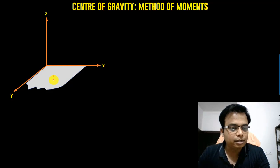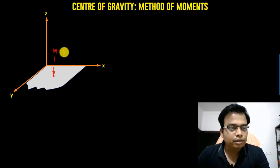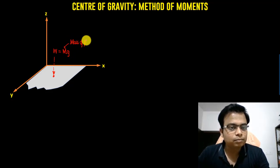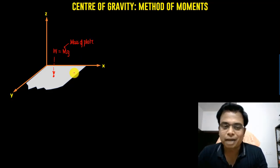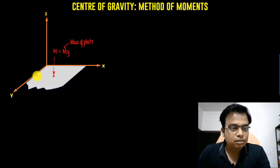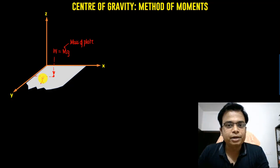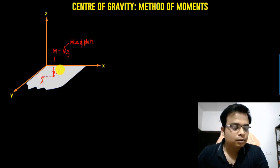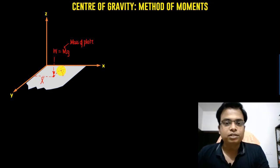Let's say the center of gravity is right here. The entire weight of the object is acting at this point. If the weight is represented by capital W, then we can write W = mg, where m is the mass of the plate. Capital X̄ is the X coordinate of the center of gravity, and capital Ȳ is the Y coordinate of the center of gravity.